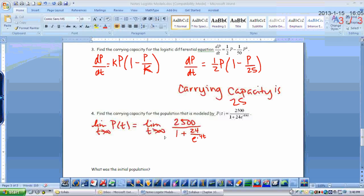So if I take the limit as t approaches infinity, if I'm looking at this little part down here, 0.4 times infinity is still infinity. So e to the infinity power is infinity. So 24 over infinity is going to approach 0. So I'm just left with 2,500 divided by 1, which is 2,500. So the carrying capacity is 2,500.